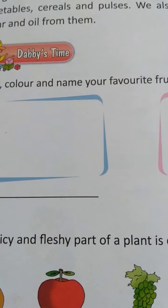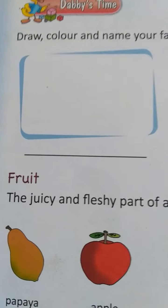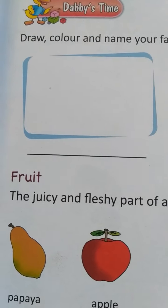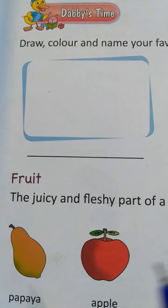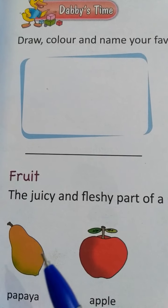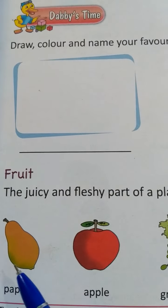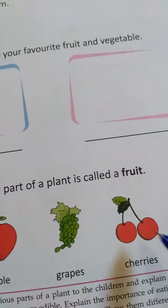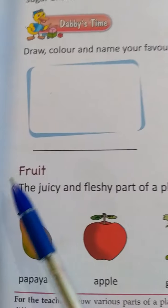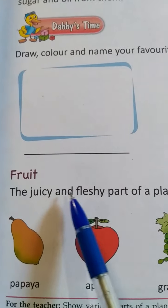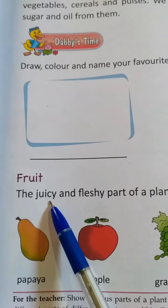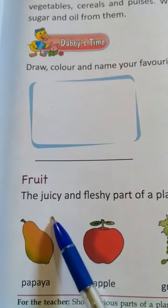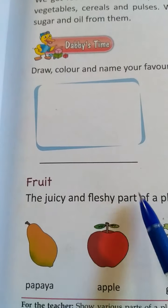First, we read about fruit. Students, you eat fruit, and everyone loves to eat fruit — like papaya, apple, grapes, cherries. The juicy and fleshy part of a plant is called fruit.